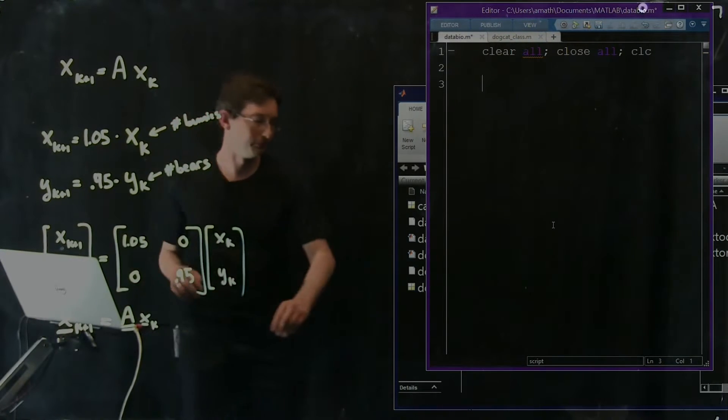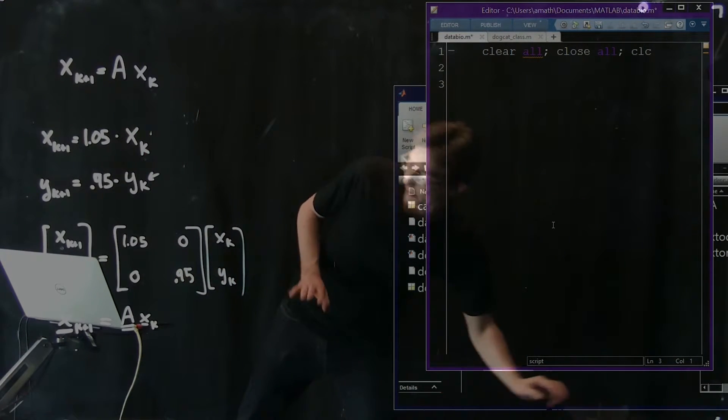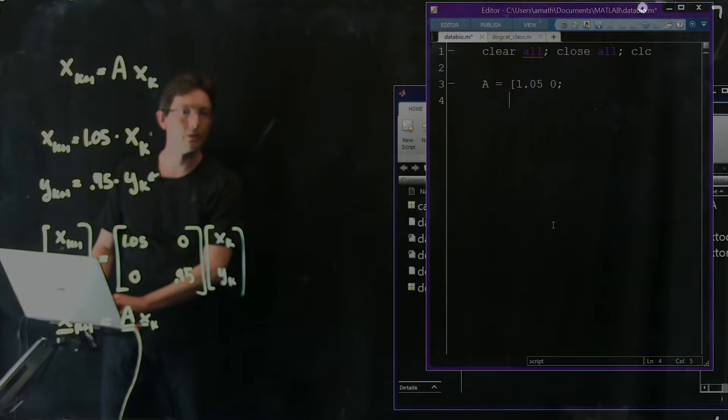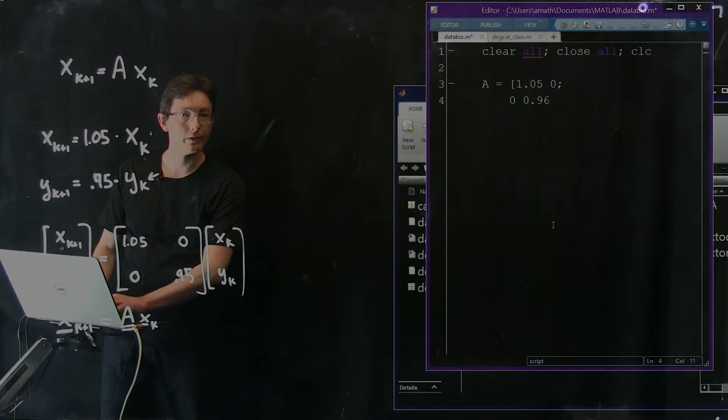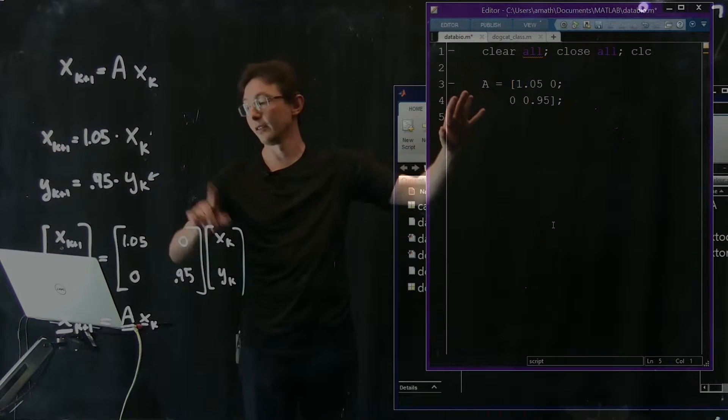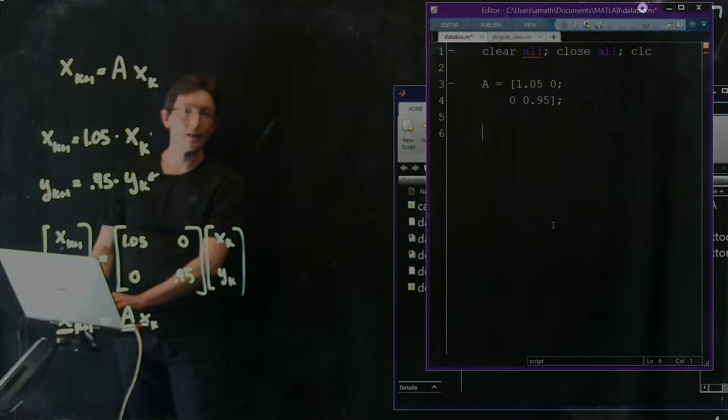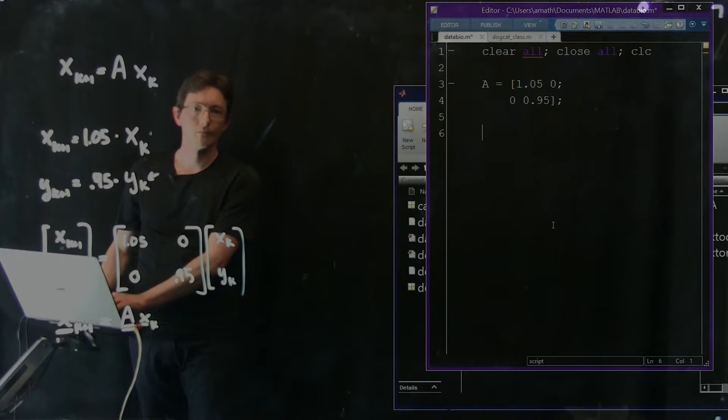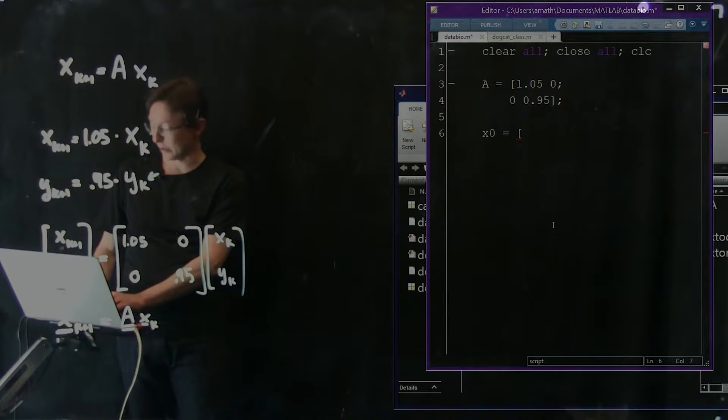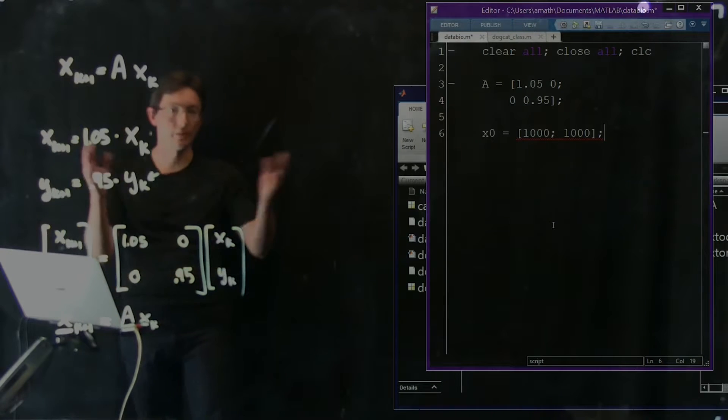We're going to code this up in the following way. So we're going to create our A matrix. We're going to say A equals 1.05, 0, and the first row, 0, 0.95. That's my matrix A that tells me if, how many bunnies and bears I have this year, how many bunnies and bears I'll have next year. Let's start off our populations so we have something like, let's say X_0. This is my initial population. Let's say that I have 1,000 bunnies and 1,000 bears. Let's just start with a bunch of bunnies and a bunch of bears.